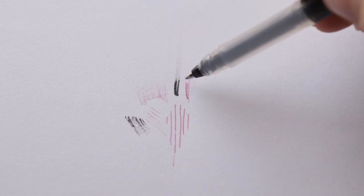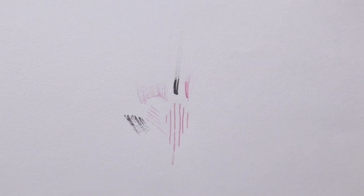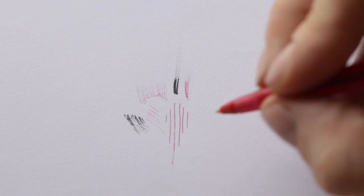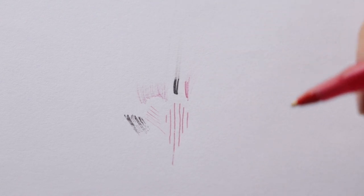As you can see here this smudges way more than the ballpoint pen and it takes a longer time to dry. So I'll compare the drying time of the ballpoint pen and the gel pen. The ballpoint pen usually dries within 30 seconds or less easily.